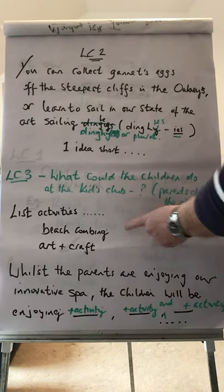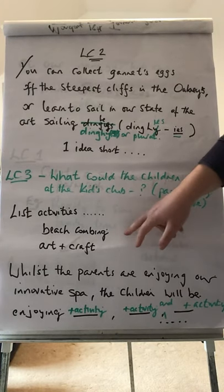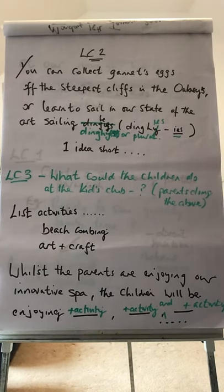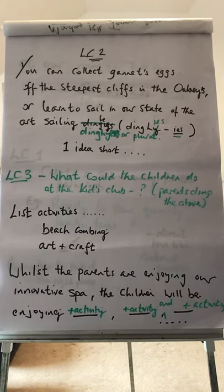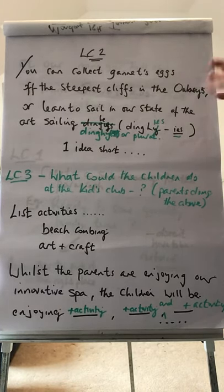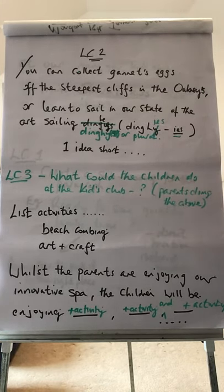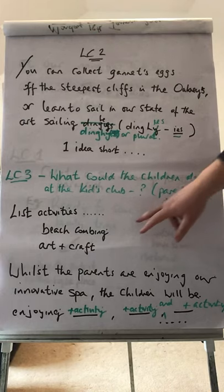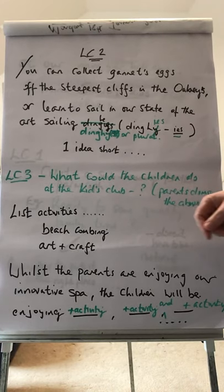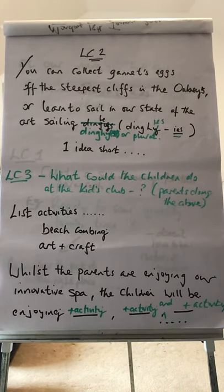A couple of ideas: beachcombing — where you walk along the beach, pick up shells, and then go back and do something with them. They might be at the art and craft workshop making or doing things. Try to think of all the times you've been to a kids club or an outside club — what kind of activities have you done? What would engage the children at this resort whilst the parents are doing other things? The parents might be off in the spa, and they would need to know their children are well looked after, well catered for, and have got activities to do.